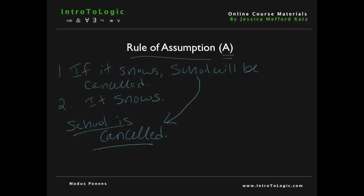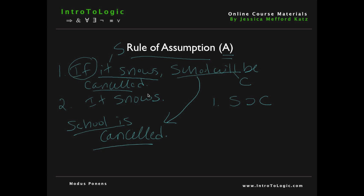Now let's write this into logical notation. 'It snows' we can symbolize with the letter S, and the sentence 'school will be canceled' can be symbolized with the letter C. So for the first premise we can say if S then C. Notice that 'if it snows' is our antecedent — we know that because 'if' gives it away — and C is our consequent. Premise two is the sentence 'it snows,' symbolized with S. And therefore C: school will be canceled.